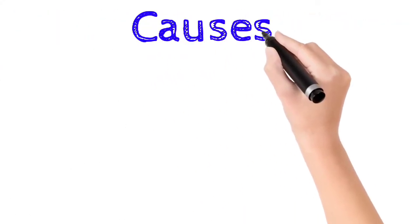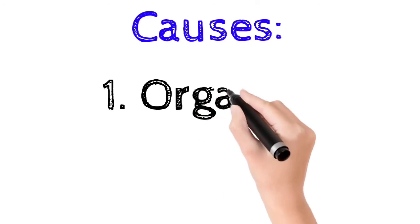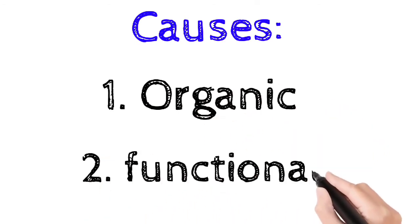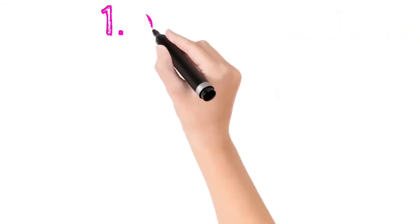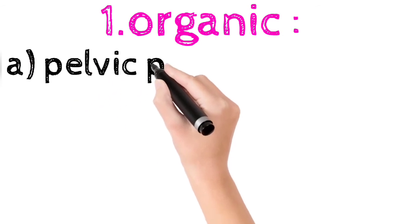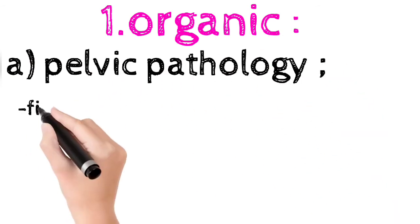Now, the next one is the causes of menorrhagia. There are organic and functional causes. The first one is organic causes. Into this, there is the pelvic pathologies.